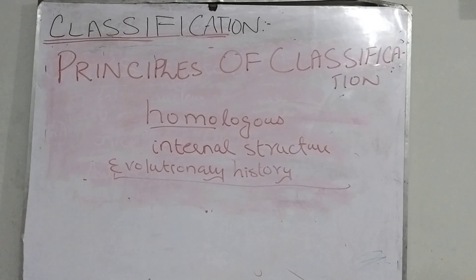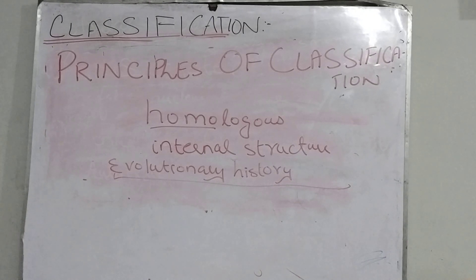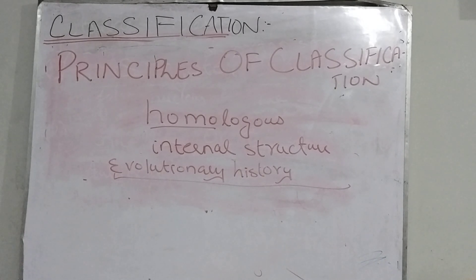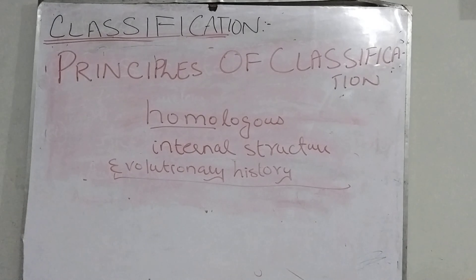So in the principles of classification, the main points are: first, physical appearance; second, we place organisms in closer groups when they have many similar homologous structures; and third, anatomical structure and evolutionary history, which go hand in hand with homologous structures.